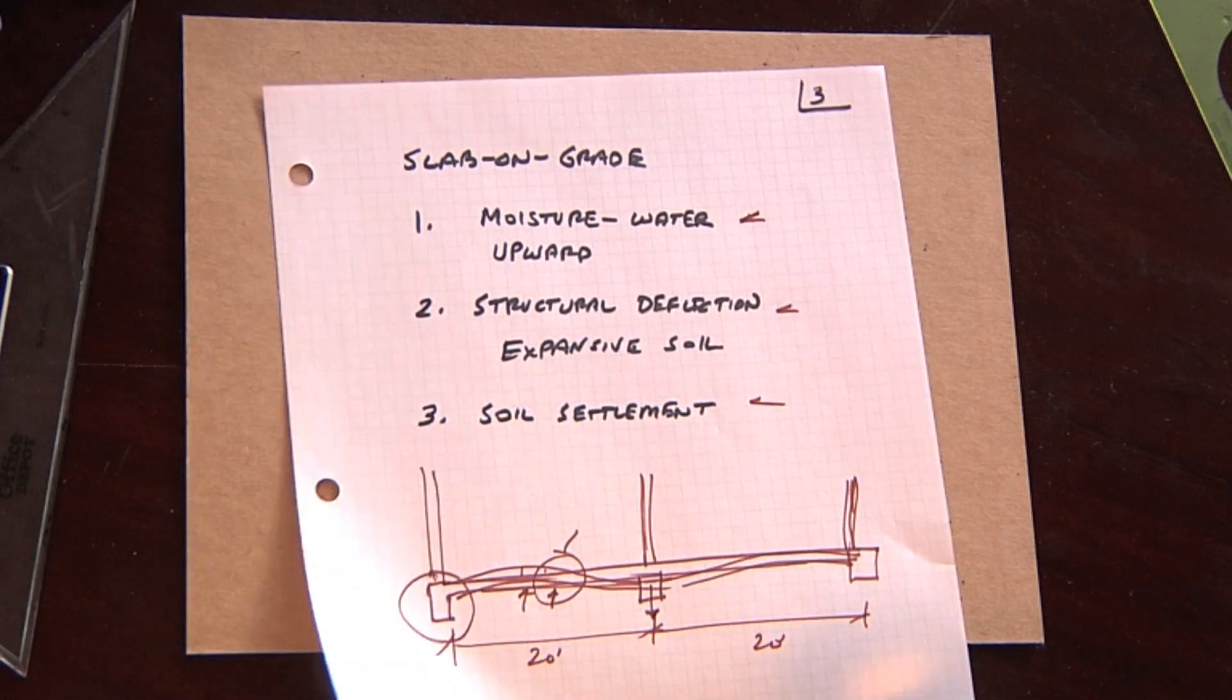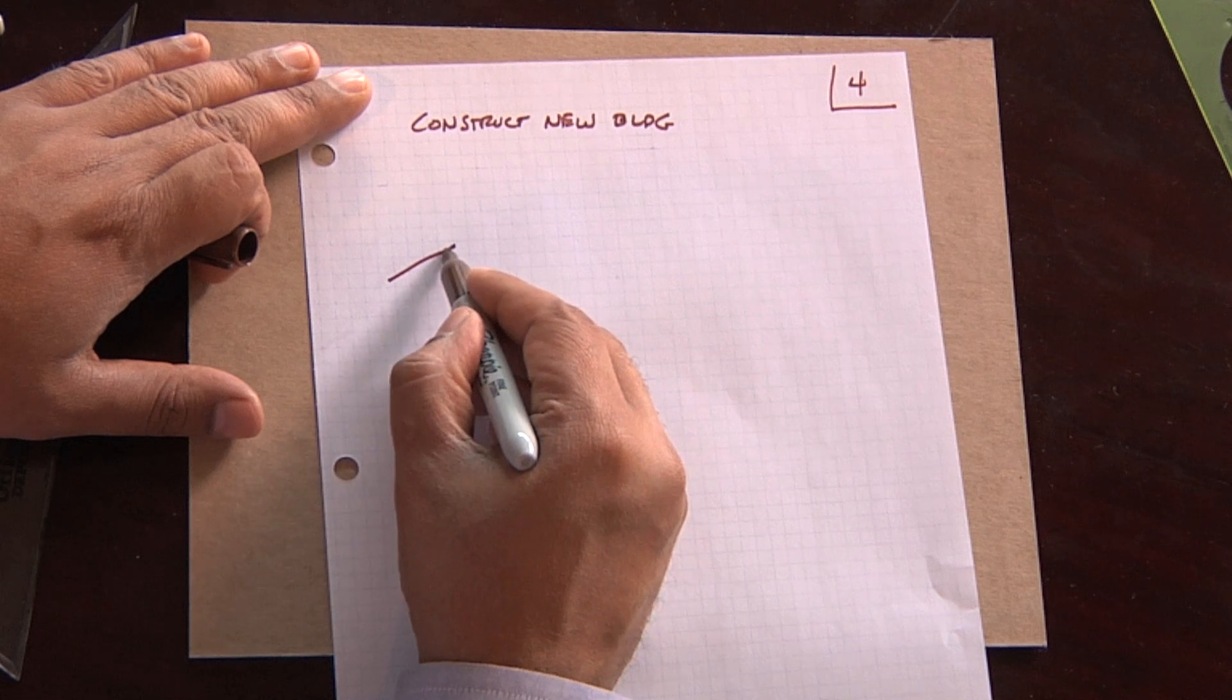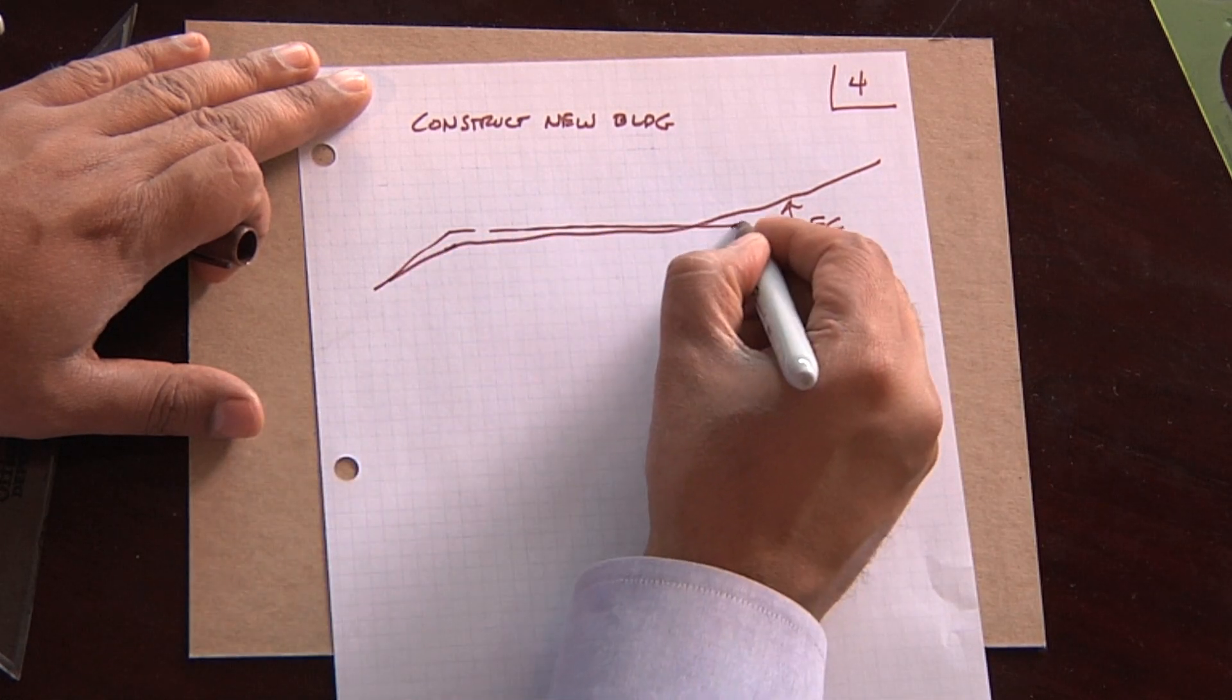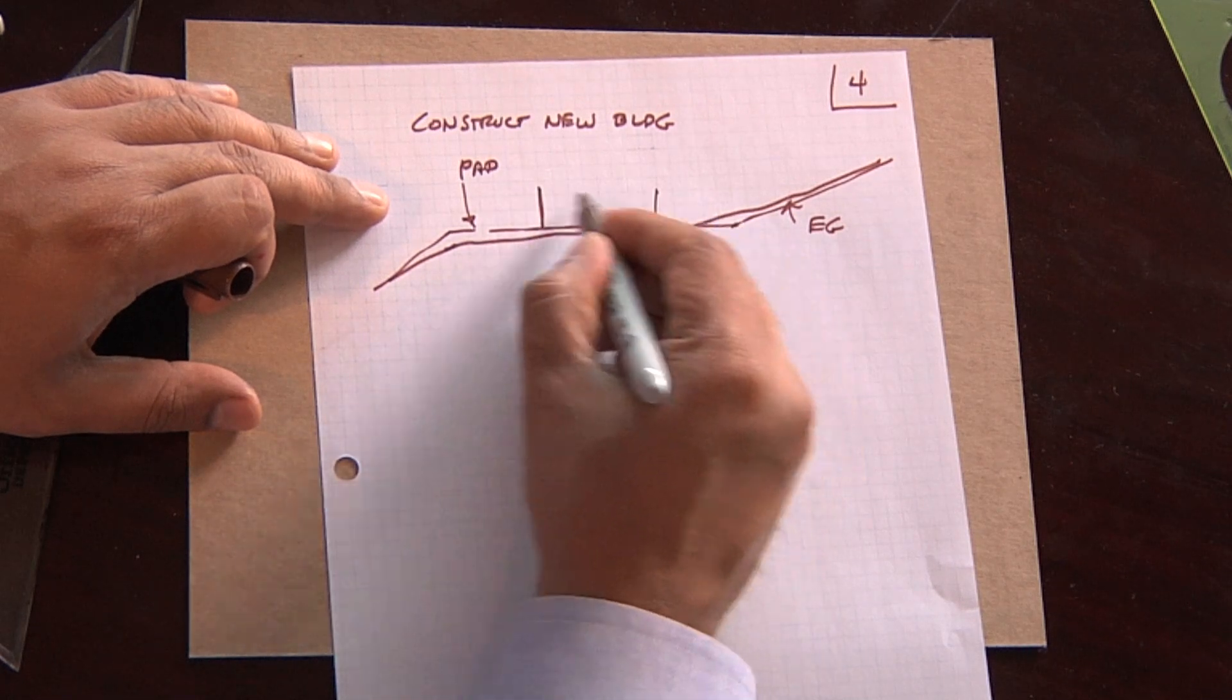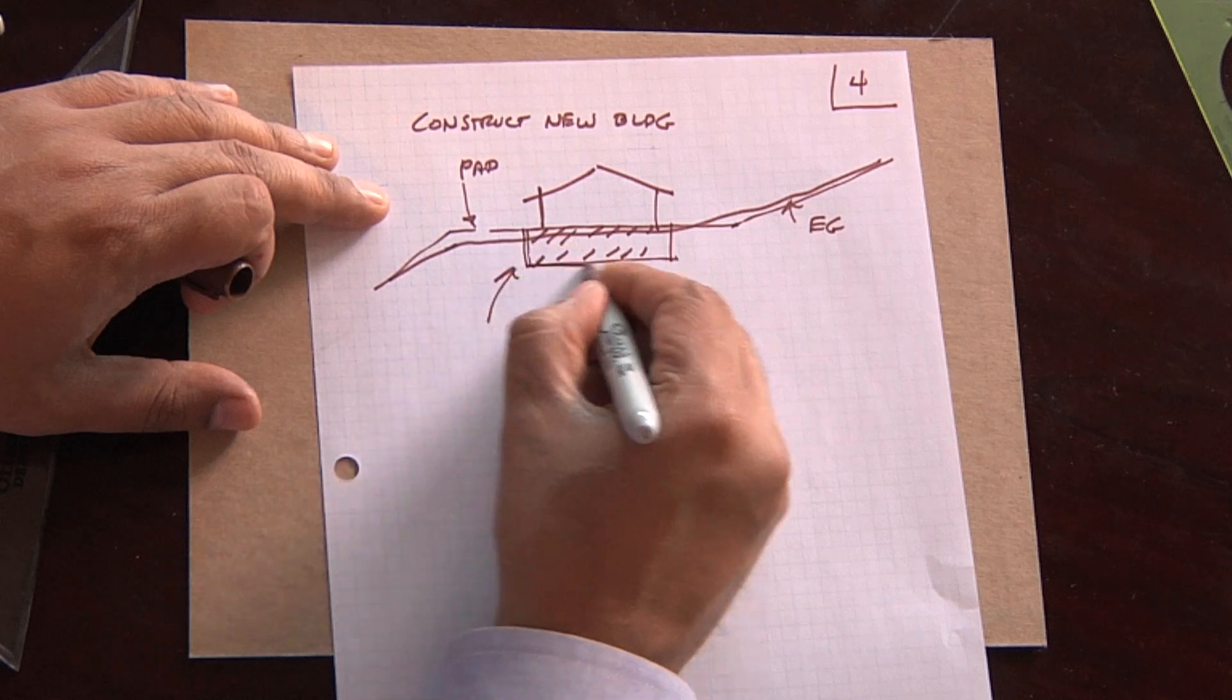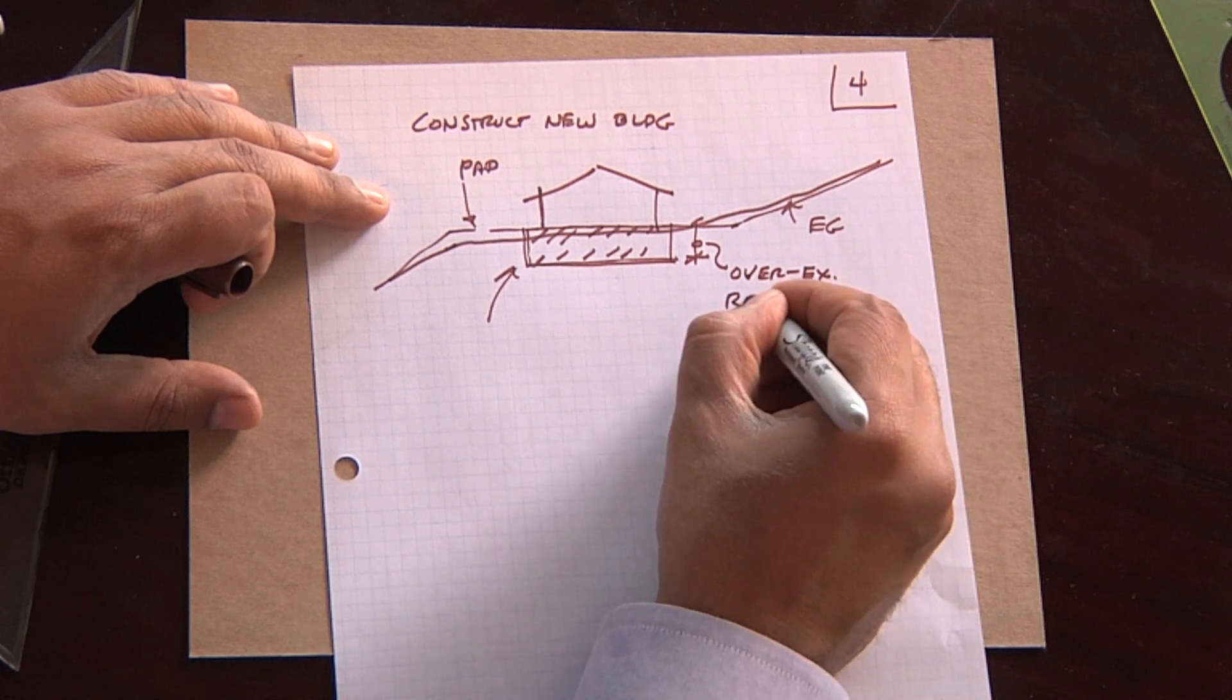Let's talk a little bit about the grading operation on how these buildings are built, because that is a source of many problems. So you're going to construct a new building. And the first thing you have to do is you have to create, I'm going to draw some line here, which is, we'll call this the existing grade. The first thing you have to do is you have to create a level pad. In creating that level pad, what's required before you can put your building up is you have to create a pad which is certified.